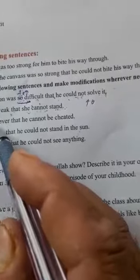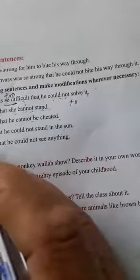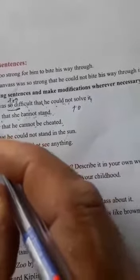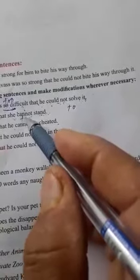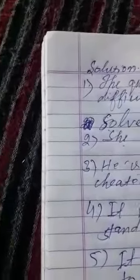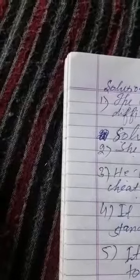He is so clever that he cannot be cheated. So کی جگہ ہم لکھیں گے TOO. Cannot be کی جگہ ہم too لکھیں گے، to. تو اس کا answer ہے: He is too clever to be cheated.